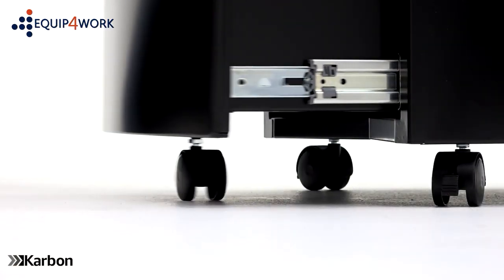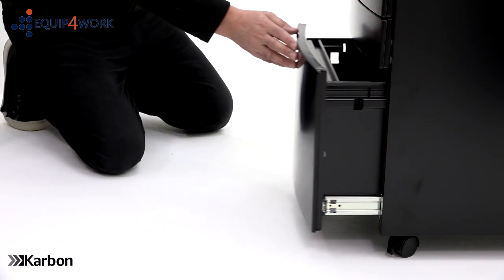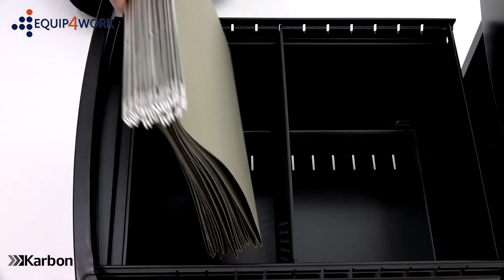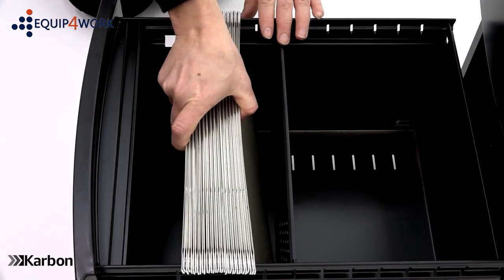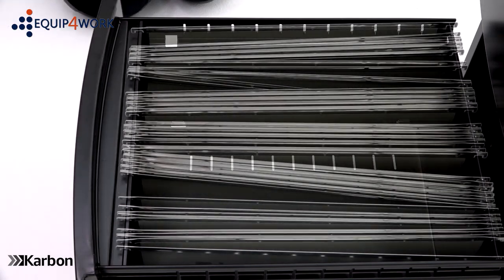Filing drawers are set on ball bearing runners for a smooth open and close action. The filing drawer accepts either full scape or A4 hanging suspension files. To hang A4 suspension files fit them in the drawer from side to side like this. To hang full scape suspension files fit them in the drawer from front to back like this.